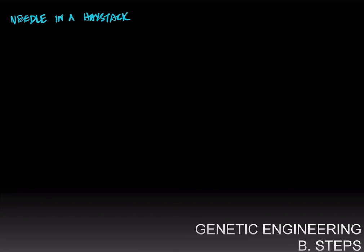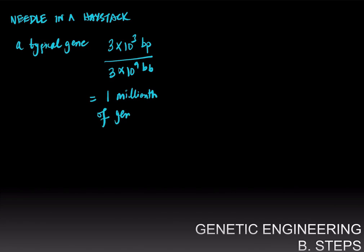And to appreciate why that is so, a typical gene is, and let's use humans as an example, its length is measured in kilobases. So let's just say for the sake of argument it's three kilobases long, a typical gene. Now, the human genome is three billion base pairs long. And what that means is that one gene is about one millionth of the human genome.